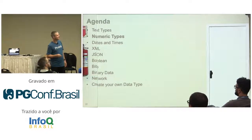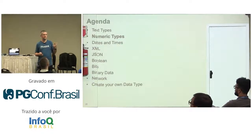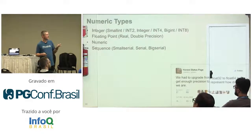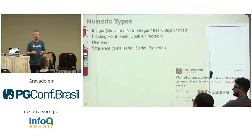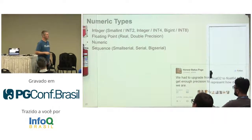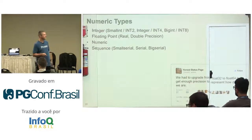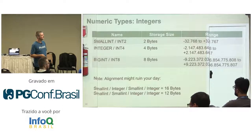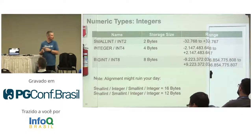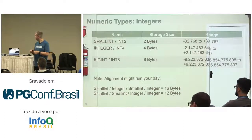Numeric types. We have integers — small integer, integer, and big integer. Then we have two floating point types: real and double precision. Then we have numeric and sequences, which under the hood are just integers. For integers: small int stores 2 bytes, integer stores 4 bytes, and big int is 8 bytes.